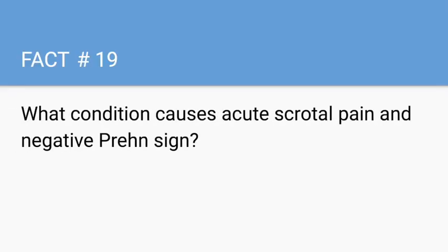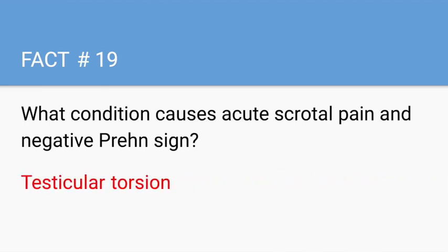What condition causes acute scrotal pain and a negative cremasteric sign? Testicular torsion. Be sure to check out the high-yield comparison video covering testicular torsion, epididymitis, hydroceles, and varicoceles — all of which appear on the pediatrics exam and Step 2.